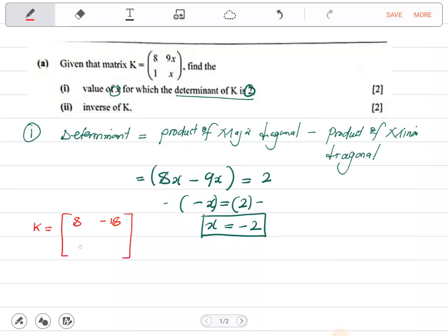Then this would be 1. And this would be negative 2. So this is what we have as the original matrix of K. That means now we can proceed and find the inverse, since we know the determinant.